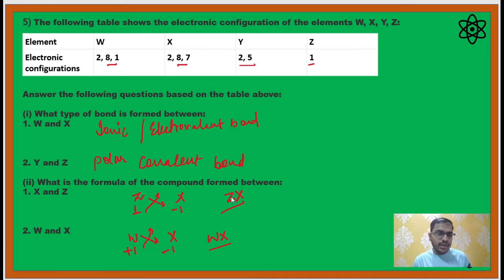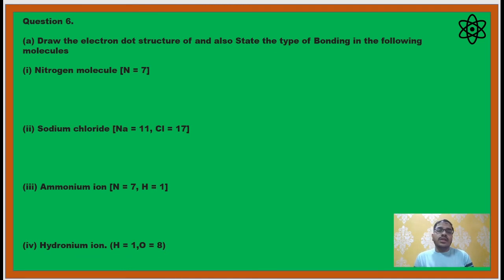Last question. Every year you will get question on this: draw electron dot diagram. I have added an extra question to it - also state the type of bonding present between the molecules. Whenever you are able to draw the structure of the molecule, you can easily predict what kind of bond does the molecule have.